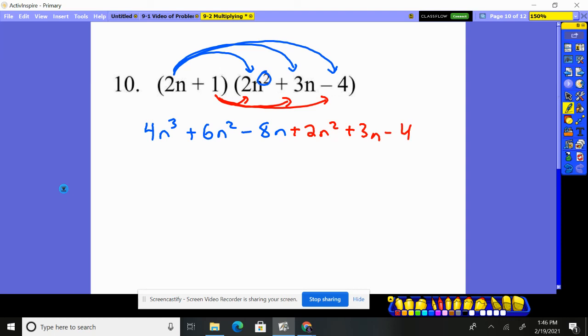Now let's just put together what can be put together. Four n cubed. Six n squared plus two n squared is eight n squared. Lose 8n, gain 3n, you've lost 5n. And then you have the number, subtract four.